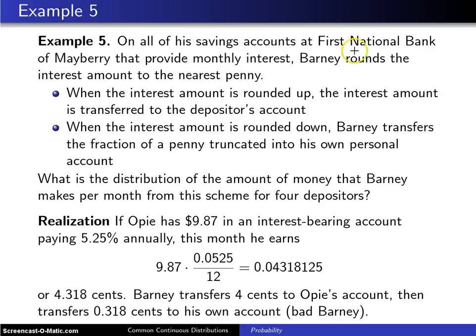On all of his savings accounts at First National Bank of Mayberry that provide monthly interest, Barney rounds the interest amount to the nearest penny. Now that makes sense.